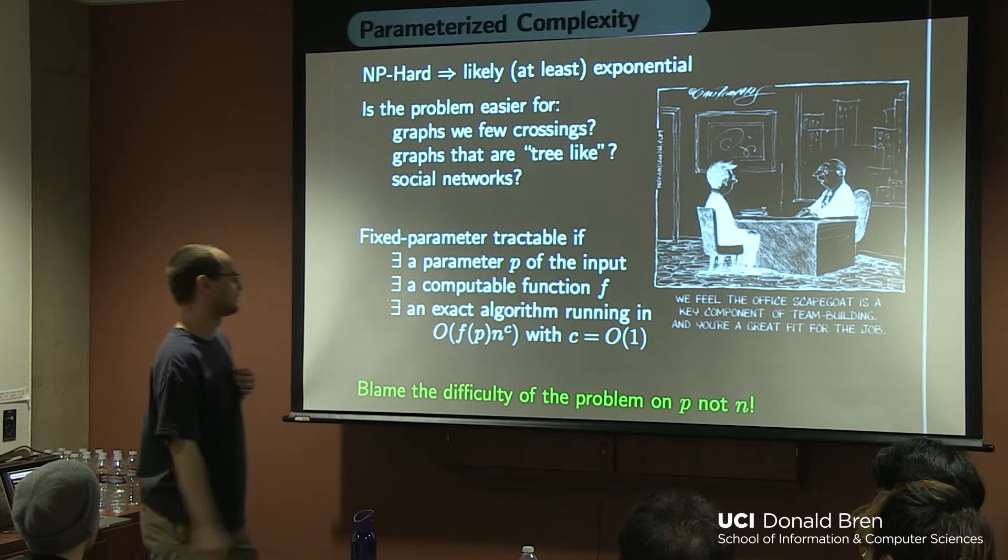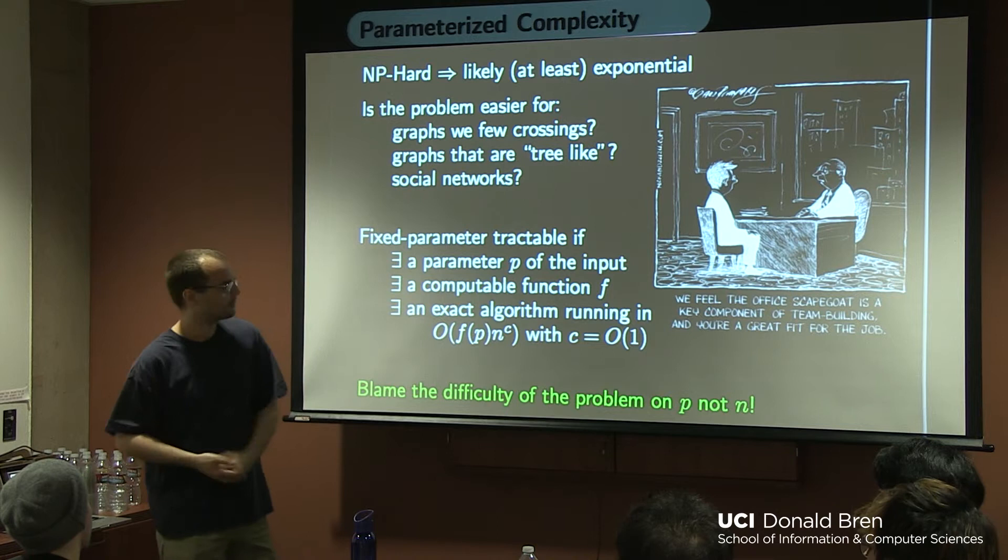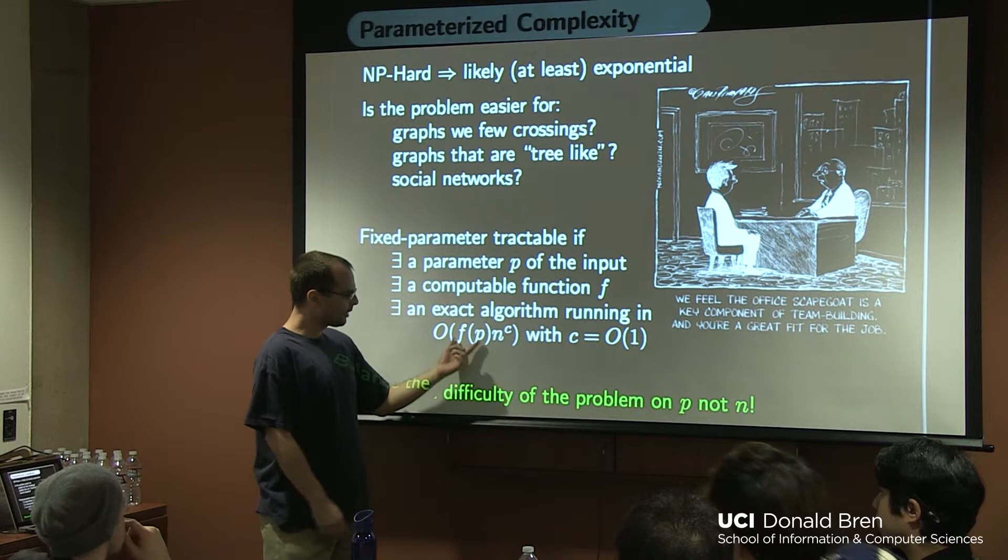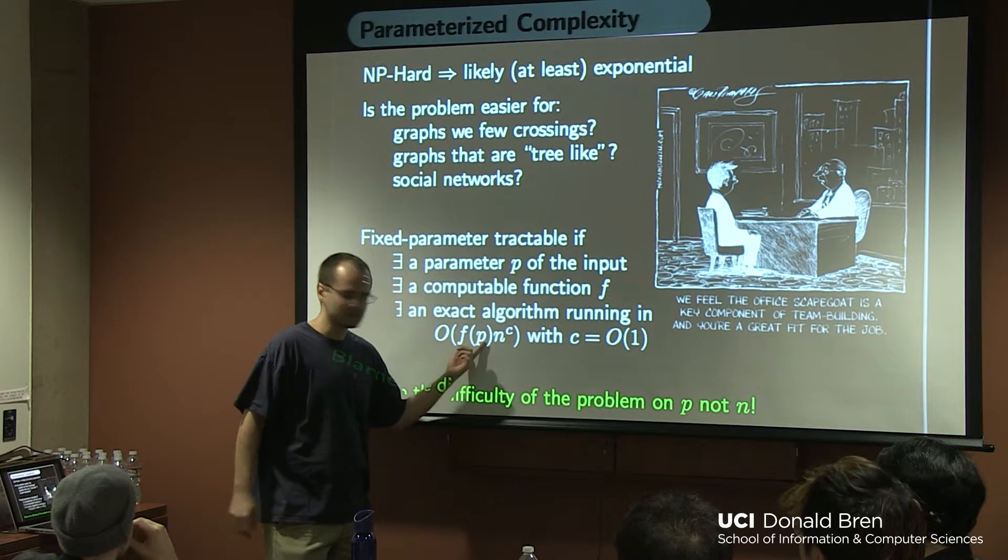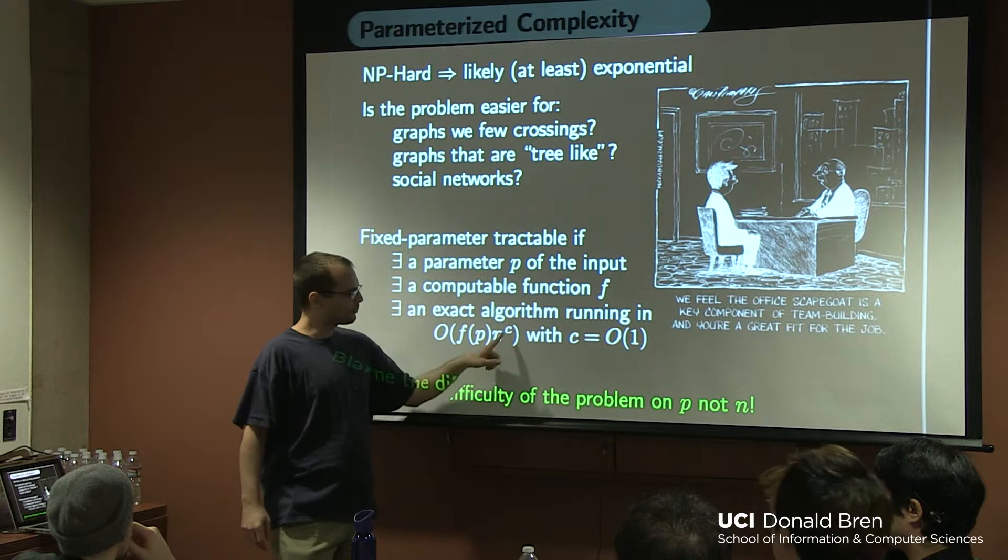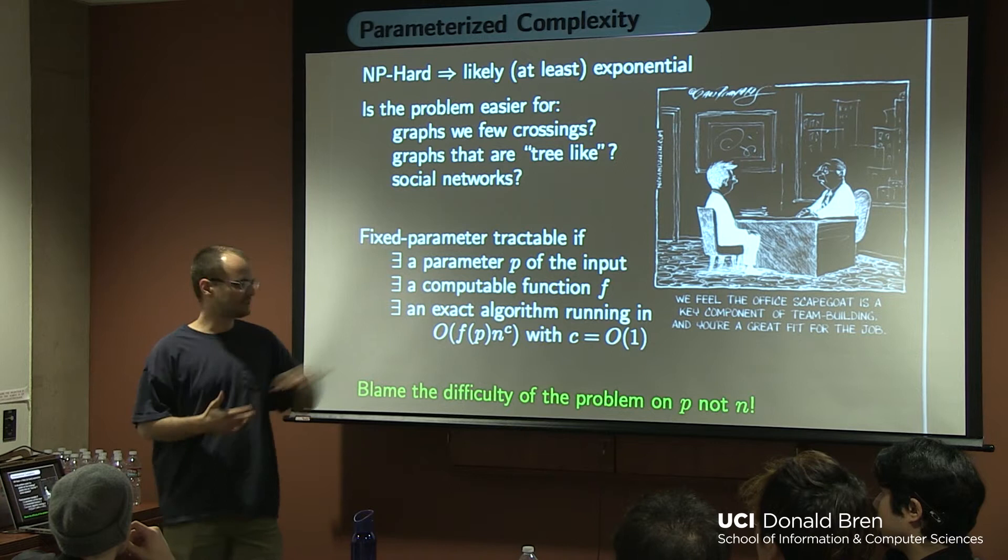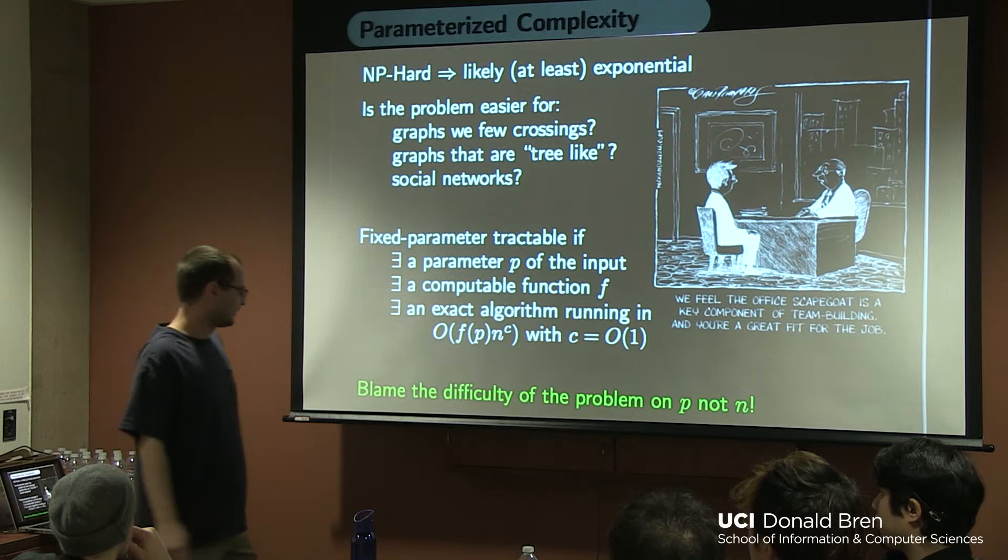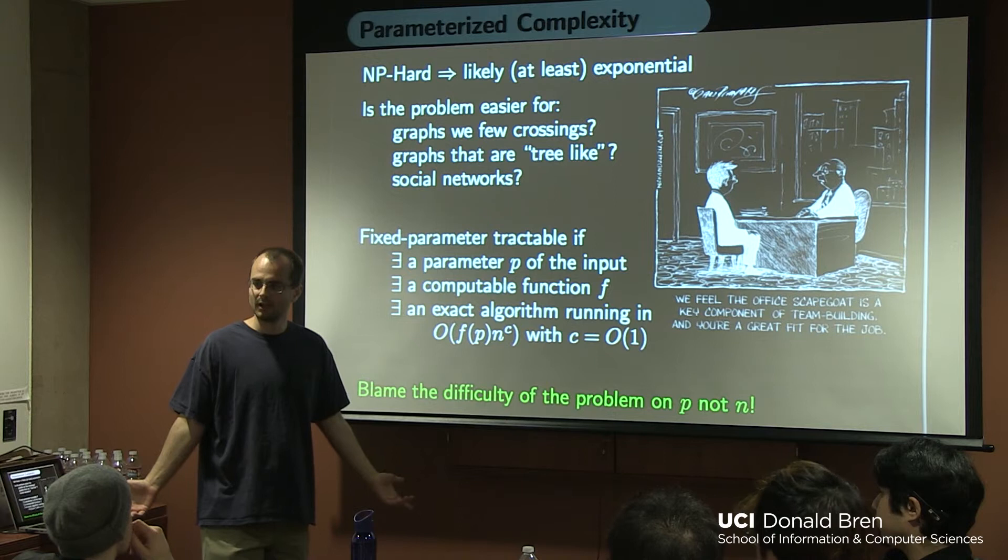And so our goal is to show it's fixed parameter tractable. What that means is there exists some parameter, there exists some computable function. And there's an exact algorithm which runs in some time where the constant depends on your parameter. So if your parameter is fixed, only the constant depends on your parameter, and the rest is polynomial. And we'd like C to be 1, 2, 3. No more than Q. It still counts if it's a million here, but you want it to be like 1, 2, or 3, because your hope is to get exact algorithms. And so, the problem is, let's blame the runtime on someone else, not on the size. Let's find some parameter to blame, and we're going to blame the runtime on that.